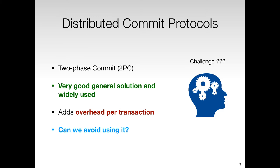In transaction processing systems, two-phase commit is the gold standard for committing distributed database transactions. It is a very good general solution and is widely used and implemented in many database systems. However, it adds a fundamental overhead per transaction. Therefore, the question is: can we avoid using two-phase commit for certain cases?